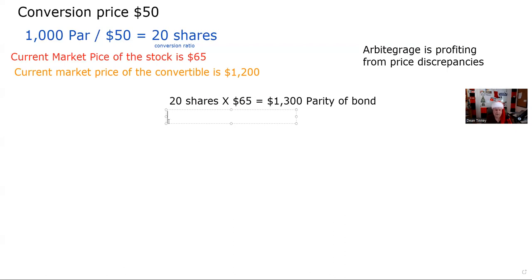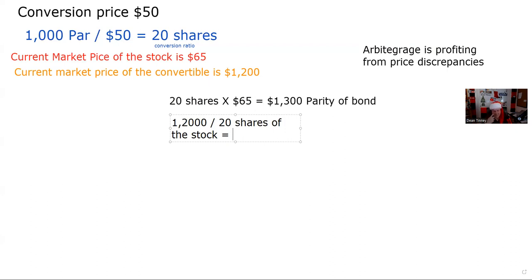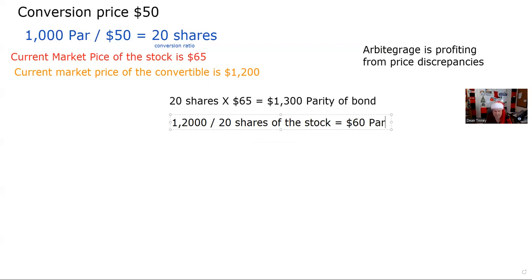Another way I could have proceeded: if I pay $1,200 for this bond and I can convert it into 20 shares of the stock, I would be paying the equivalent of — $1,200 divided by 20 is $60. I'd be able to get the stock for $60 and the stock's at $65. So I've discovered the arbitrage opportunity another way. Parity just means when they're equal, so paying $1,200 for this bond is the equivalent of paying $60 for the stock.